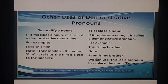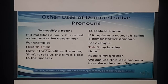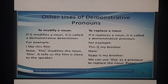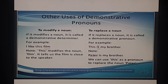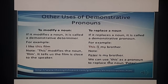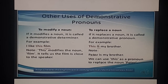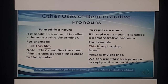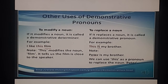Here 'this' replaces the noun 'Peter' - instead of saying 'Peter is my brother', we can say 'This is my brother', using 'this' as a pronoun. So there is a difference between demonstrative pronouns and demonstrative adjectives. Don't confuse between the two, just like we have possessive adjectives and possessive pronouns. Now we also have demonstrative adjectives and demonstrative pronouns.